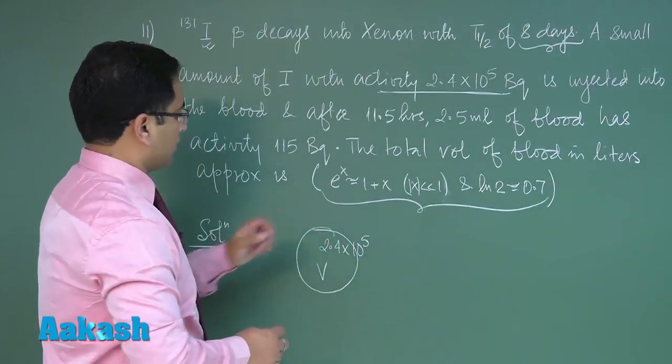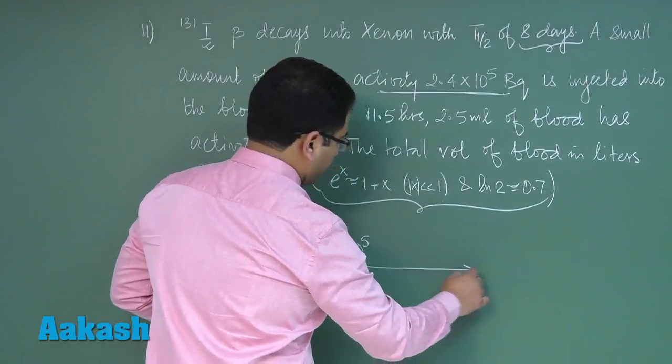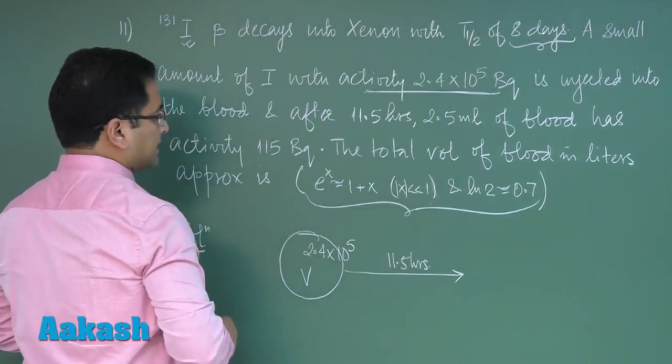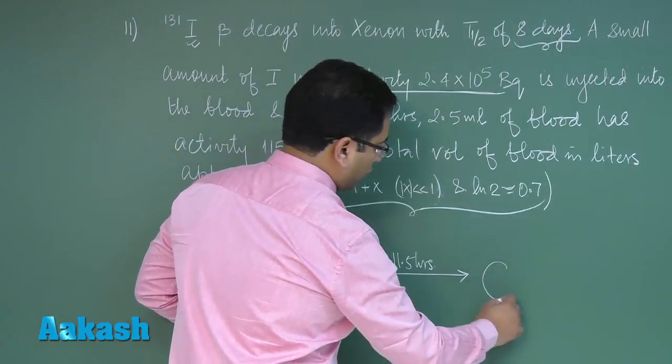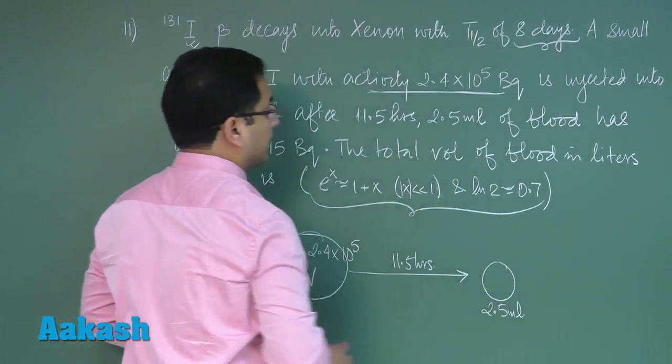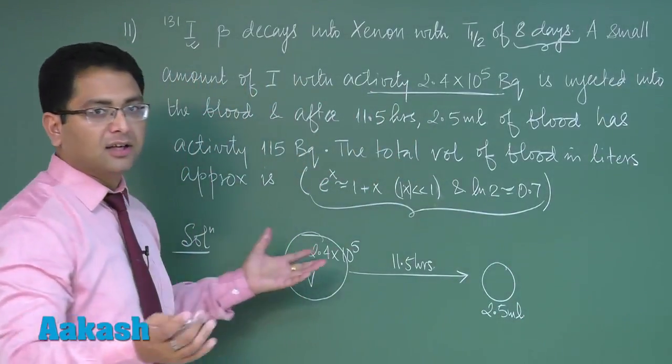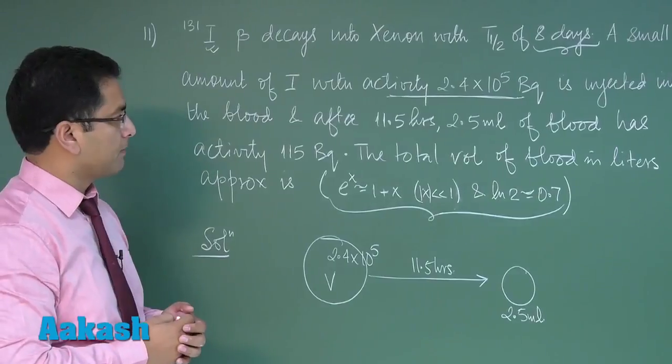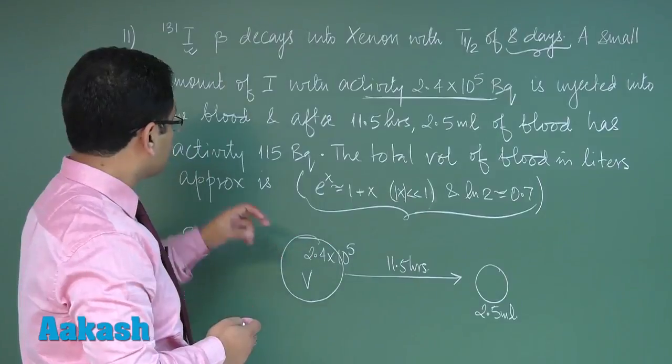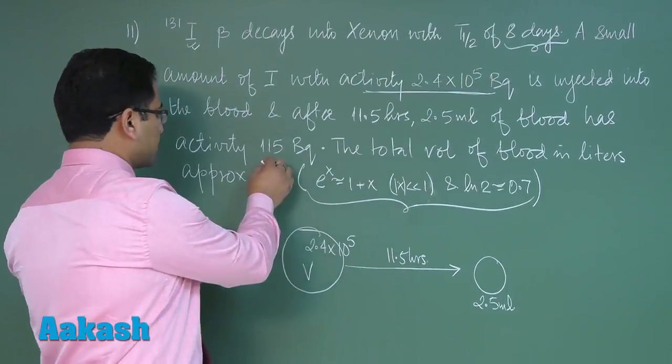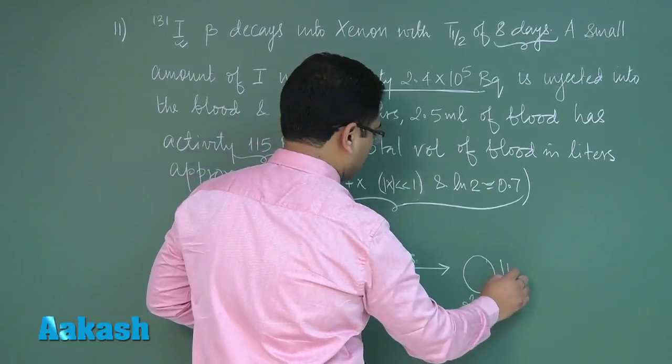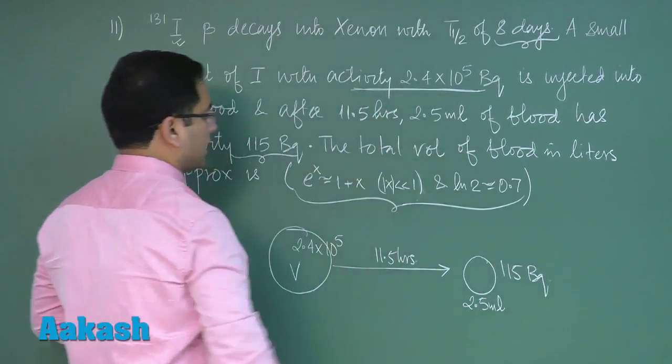Now later on, after 11.5 hours, the sample taken is not the entire volume but only 2.5 milliliter of the blood. That is the sample which has been taken. For all practical reason, this 2.5 milliliter of blood contains iodine with activity at this particular stage of 115 becquerel.